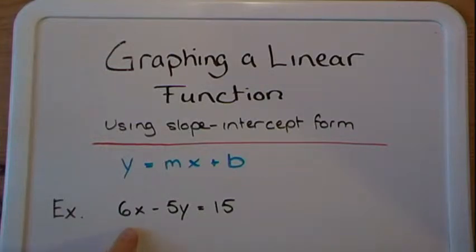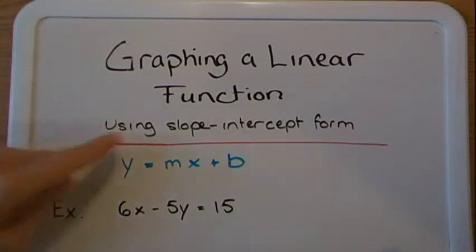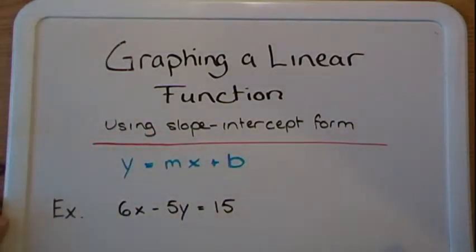Well, if we're given this equation as an example, 6x minus 5y equals 15, to be able to find the slope of that line we need to rewrite it into this form, into the y equals mx plus b form, which is also called the slope-intercept form, and that's why this method is called the slope-intercept form method.